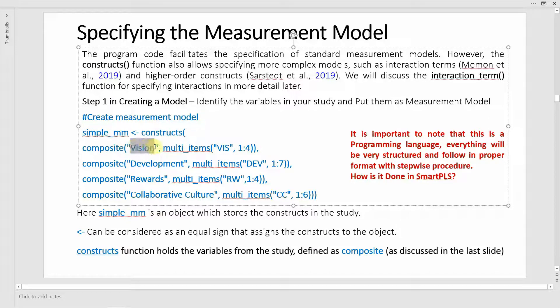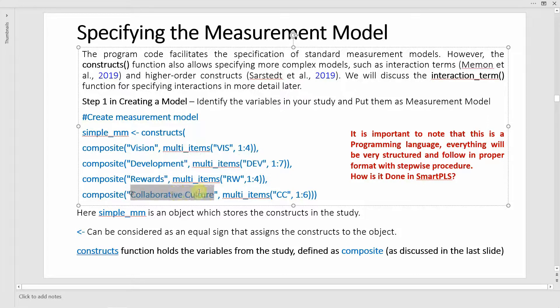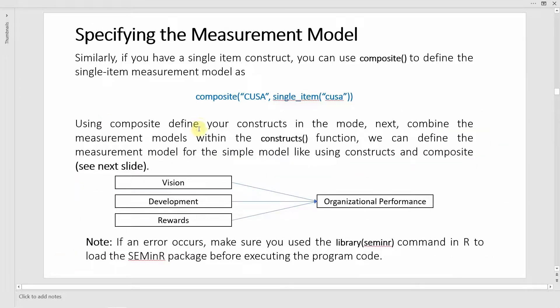The code defines four constructs: the first construct, the second construct, the third construct, and the fourth construct.